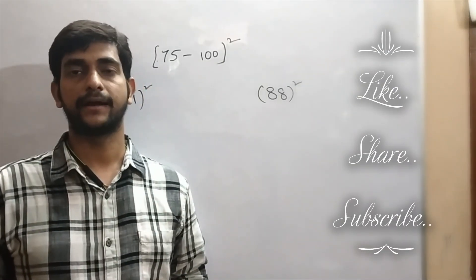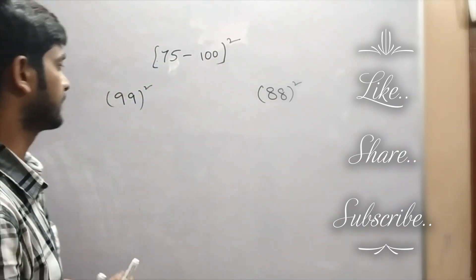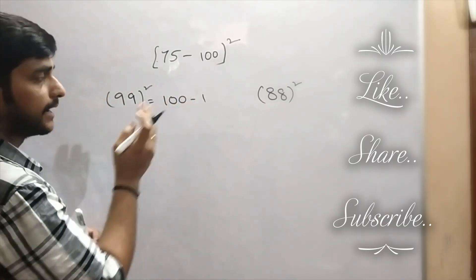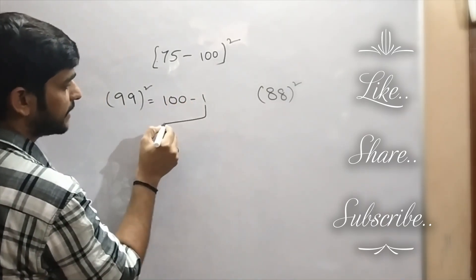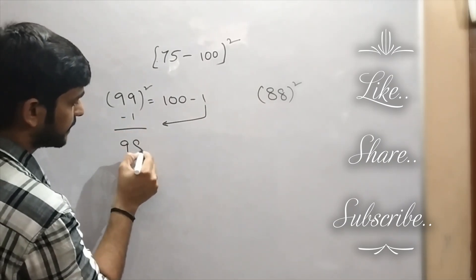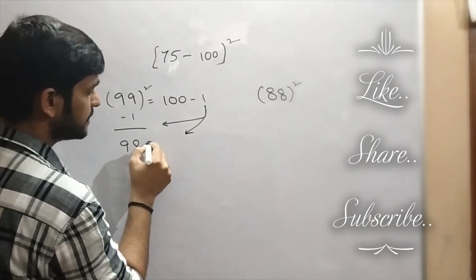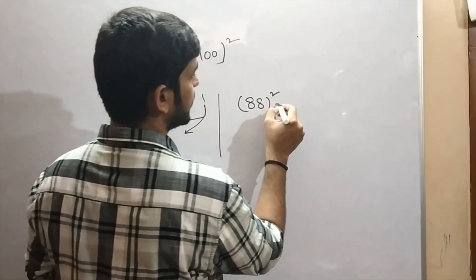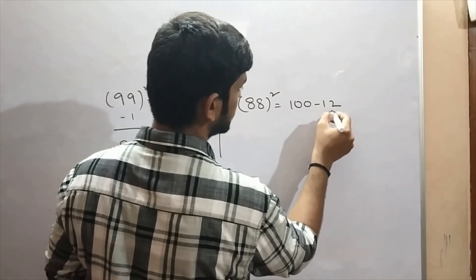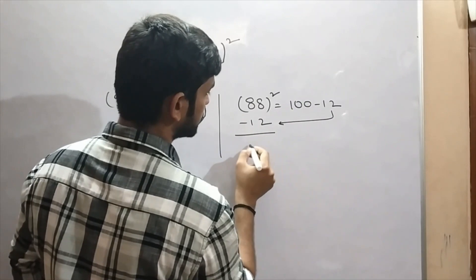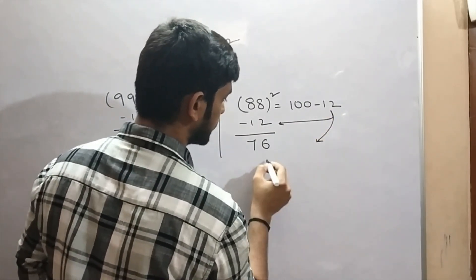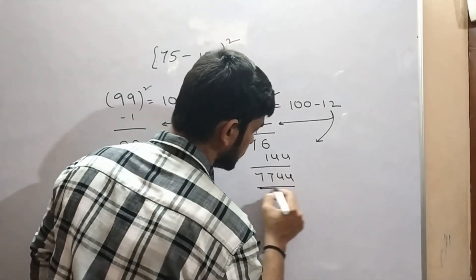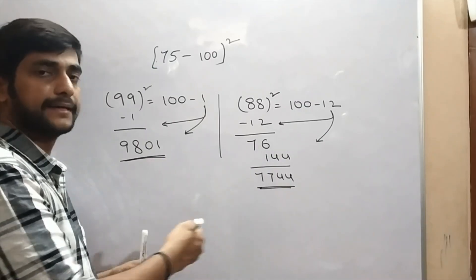Now we are going to find out squares from the range of 75 to 100. Take 99 squared. 99 we can write it as 100 minus 1. Take 100 as a base, so subtract 1 from 99 — here we are getting 98. And 1 squared will be 01. So 9801 will be 99 squared. Next, 88. 88 we can write it as 100 minus 12. Subtract this 12 from 88 — here we are getting 76. And 12 squared will be 144. So the answer for 88 squared is 7744.